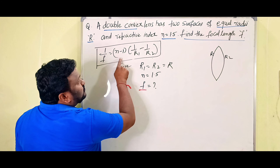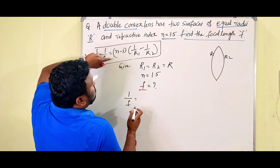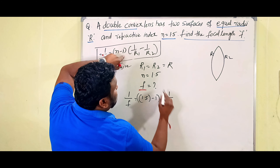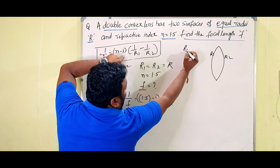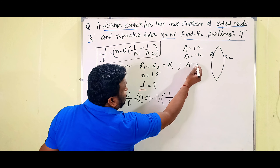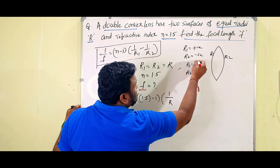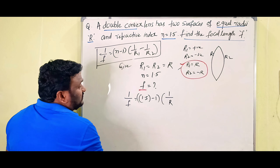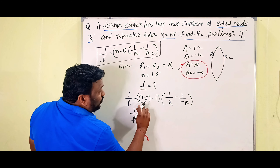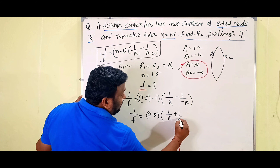Applying the lens maker formula: 1/f = (n − 1)(1/r1 − 1/r2) = (1.5 − 1)(1/r − 1/(−r)) = 0.5 × (1/r + 1/r) = 0.5 × (2/r).